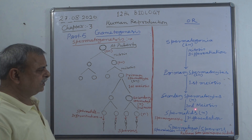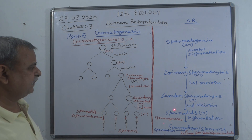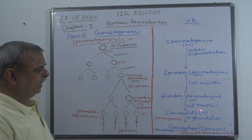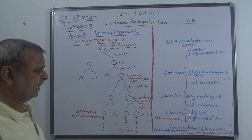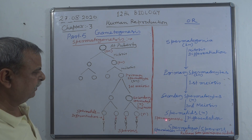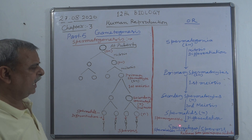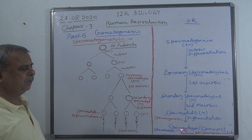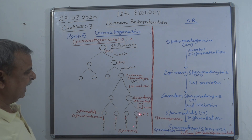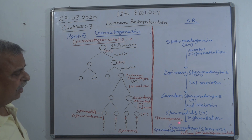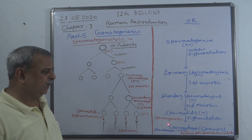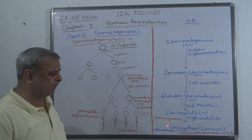When the second meiotic division occurs, spermatids are formed and they are also haploid. These spermatids then undergo a differentiation process called spermiogenesis, and sperms are formed. So spermatids are haploid and they differentiate through the process of spermiogenesis to produce sperms.